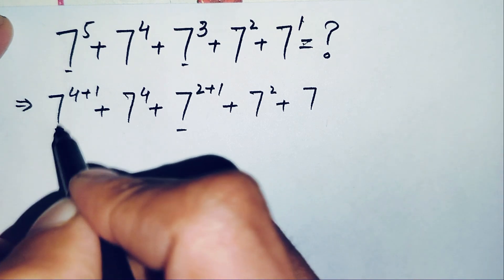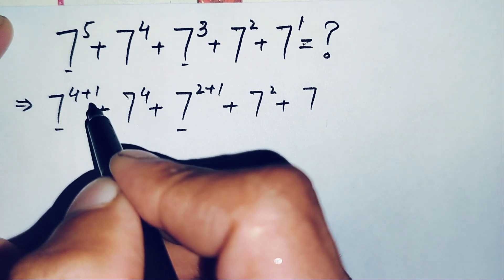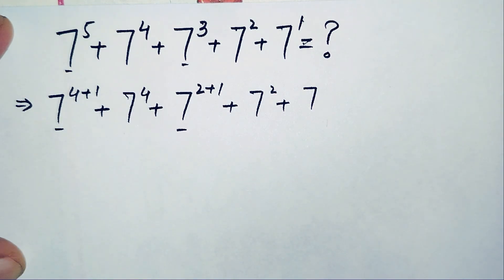Now, in these two terms we will use the exponential math property: r raised to power m plus n equals r raised to power m times r raised to power n.